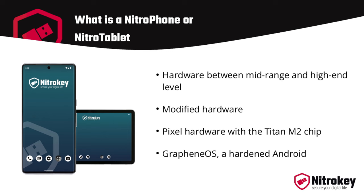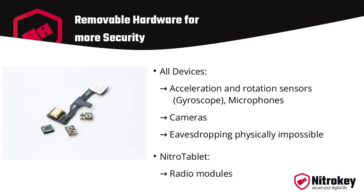On the software level, the device runs GrapheneOS, the most hardened Android available. To make it physically impossible to monitor the environment, the Nitrophone or Nitro Tablet can be ordered with optional removable microphones, acceleration and rotation sensors, gyroscope, and cameras. Acceleration and rotation sensors could be misused as microphones. The speakers are connected via an AD converter so they cannot be misused as microphones.